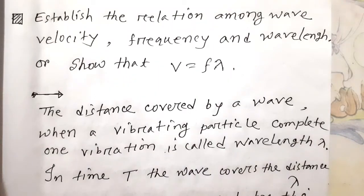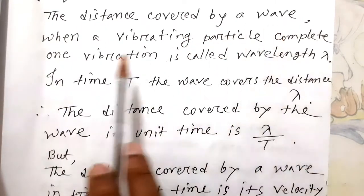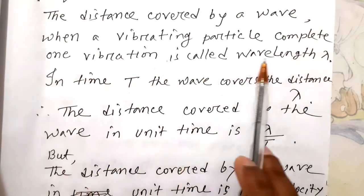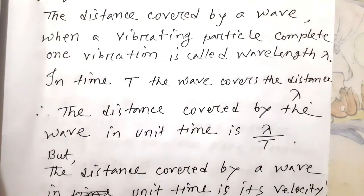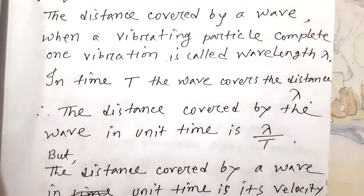Dear students, now I am going to discuss wave velocity, frequency, and wavelength. I will try to prove the relation V = fλ among wave velocity, frequency, and wavelength. The distance covered by a wave when a vibrating particle completes one vibration is called wavelength, lambda.